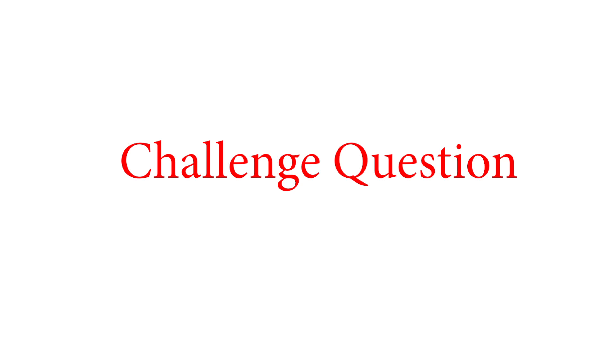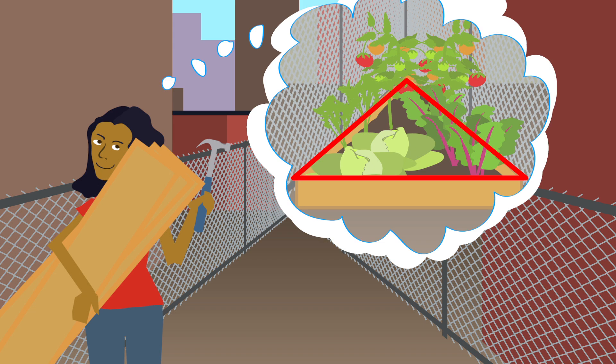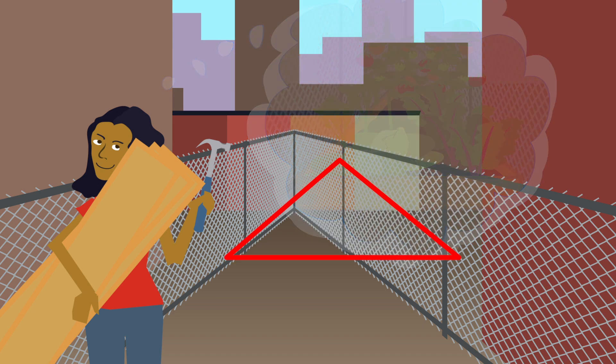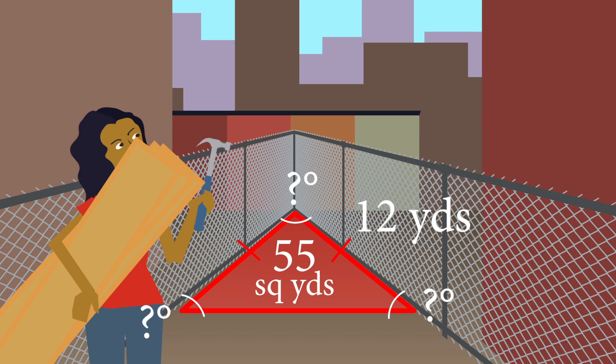Challenge question. Jennifer wants to build a garden in the shape of an isosceles triangle. One of the congruent sides is equal to 12 yards. If the area of the garden is equal to 55 square yards, find to the nearest tenth of a degree all three angles of the triangle.